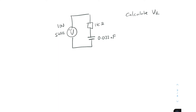We're going to calculate the voltage across the resistor, the voltage across the capacitor, and then the phase angle as well. To get the voltage across the resistor and capacitor, we need to find the impedance for the whole circuit. The impedance is Z = R - jXc, since we're dealing with resistance and capacitance.